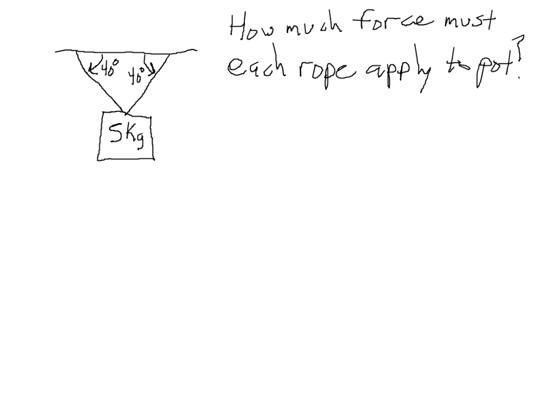Step two is to draw a picture of the problem, and we have done that. We've identified the object of interest, the flower pot, and what forces there are on it, in this case the rope, and we'll have gravity pulling down.